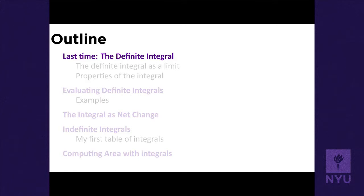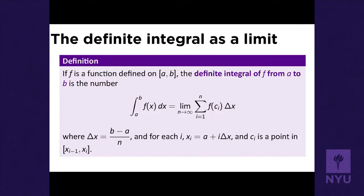Let me remind you of the basic object we're studying in this chapter and talk a little bit more about its properties. Anytime you've got a function defined on the closed interval a to b, you can try to see if the definite integral exists. The definite integral is defined as the limit of Riemann sums.